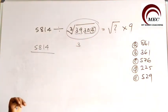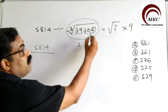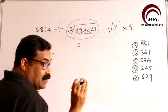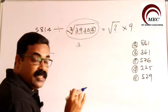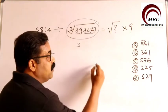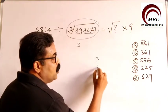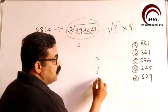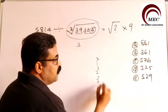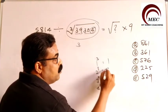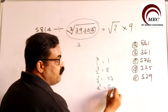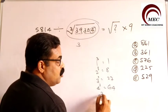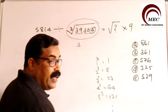The cube of which number ends with 4? You have to remember: 1 cube is 1, 2 cube is 8, 3 cube is 27, 4 cube is 64, 5 cube is 125. So the number whose cube ends with the single digit 4 is 4.